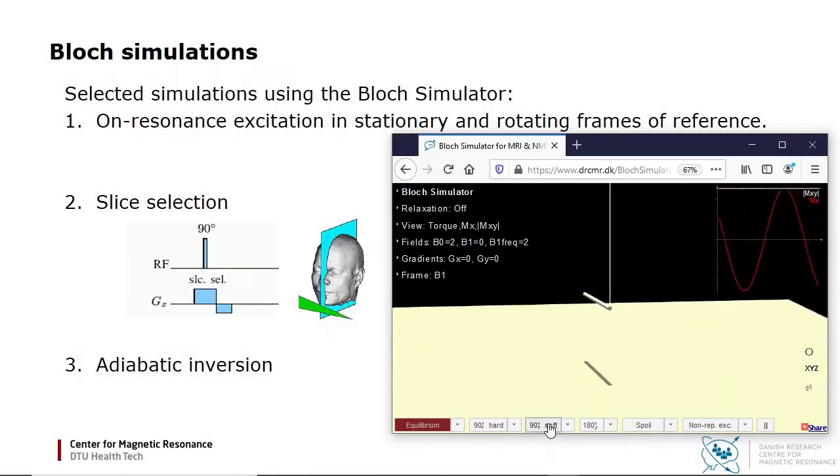If I apply another 90 degree pulse, I can rotate the magnetization further, for example to invert it.